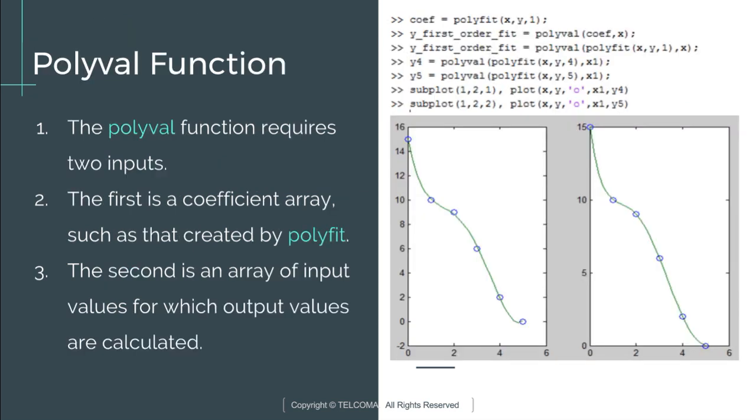Next is the polyval function. The polyval function requires two inputs. The first is a coefficient array, such as that created by polyfit. The second is an array of input values for which output values are calculated, like I have written in this program.